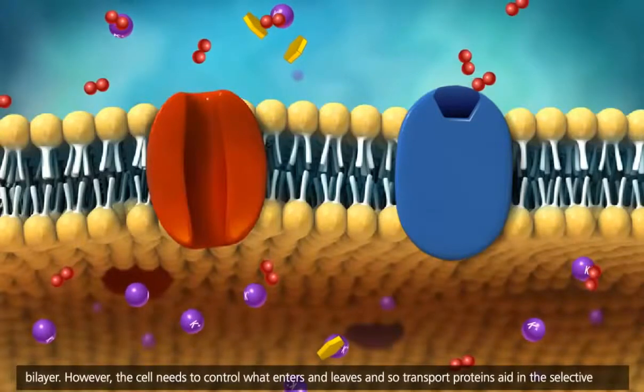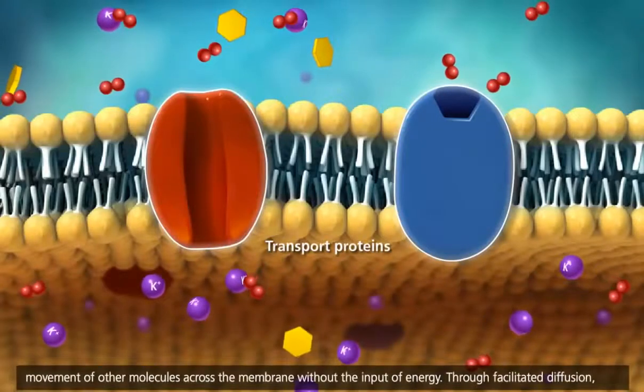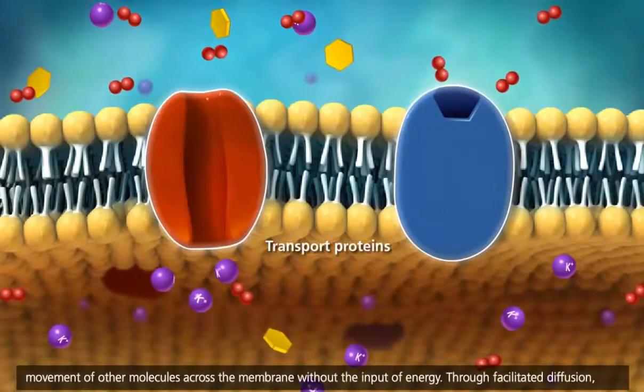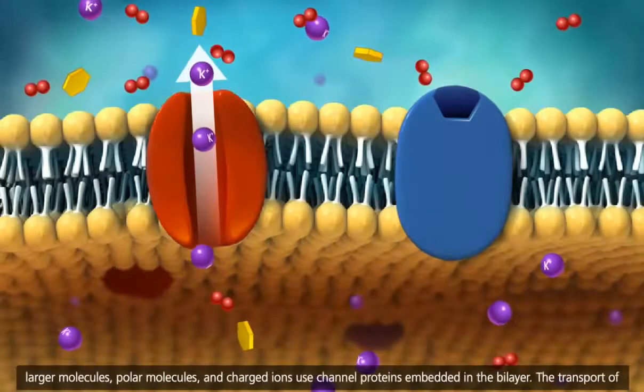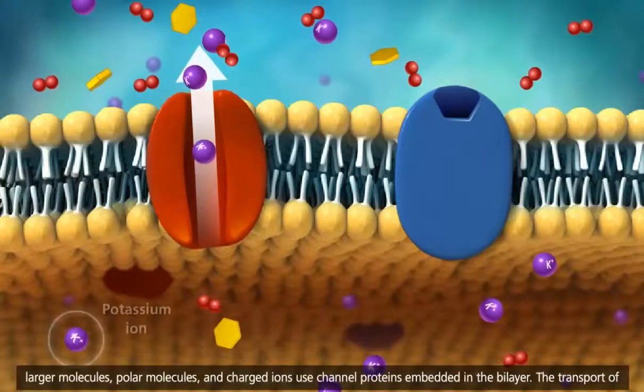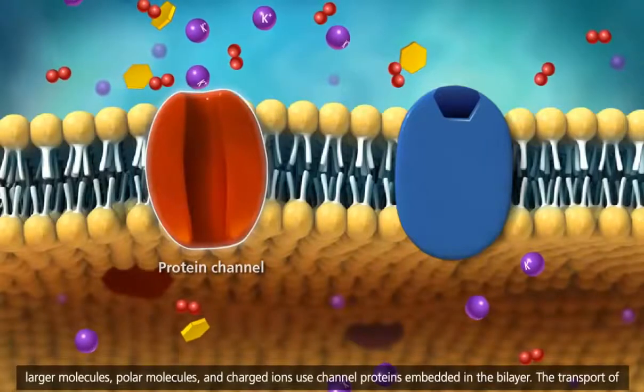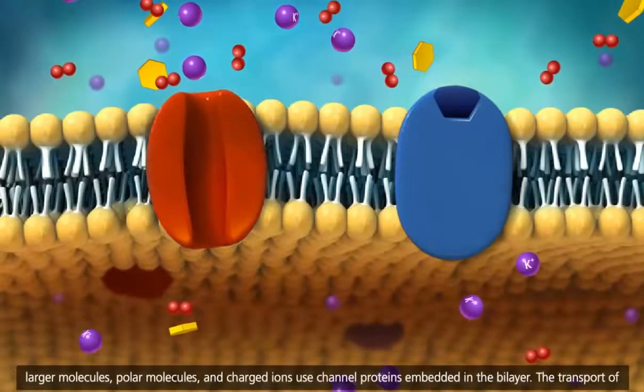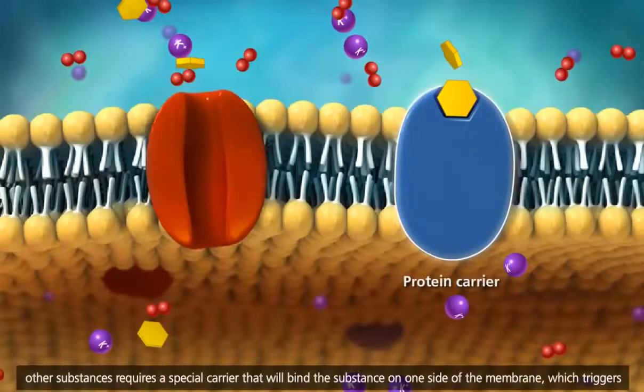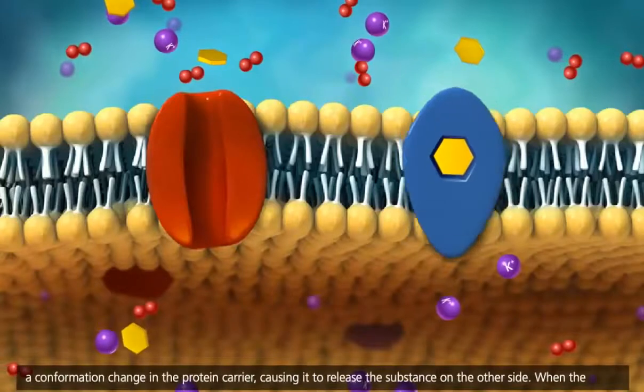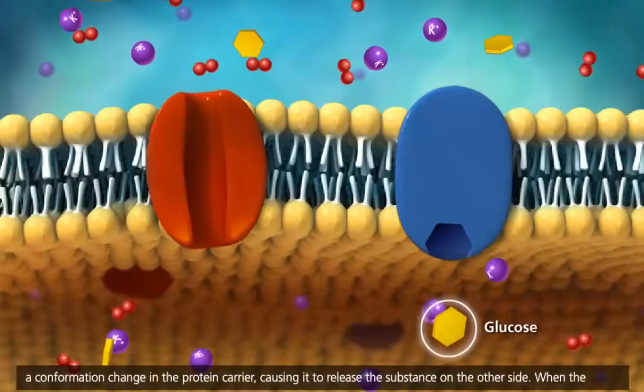However, the cell needs to control what enters and leaves, and so transport proteins aid in the selective movement of other molecules across the membrane without the input of energy. Through facilitated diffusion, larger molecules, polar molecules, and charged ions use channel proteins embedded in the bilayer. The transport of other substances requires a special carrier that will bind the substance on one side of the membrane, which triggers a conformation change in the protein carrier, causing it to release the substance on the other side.